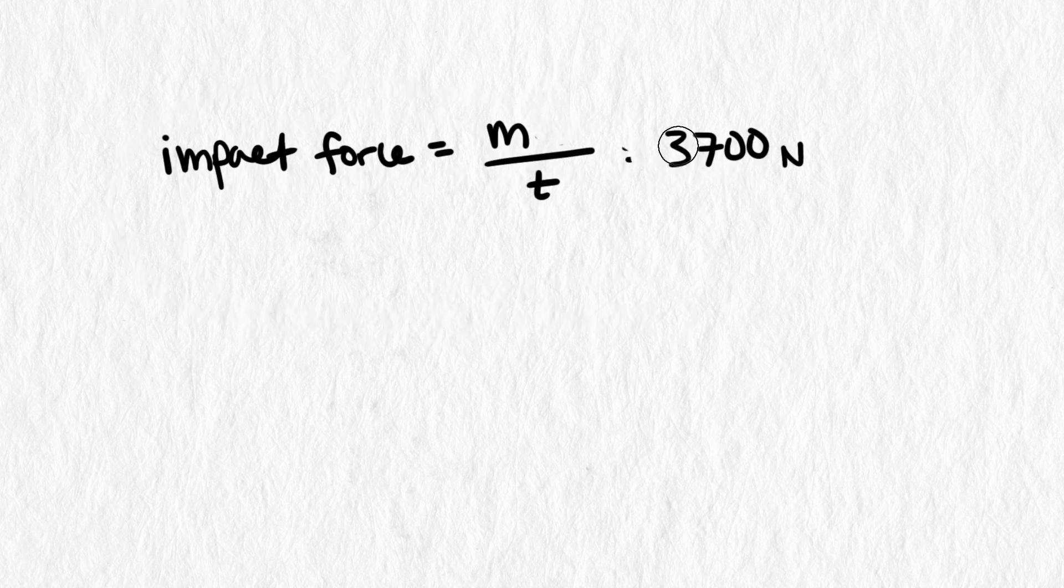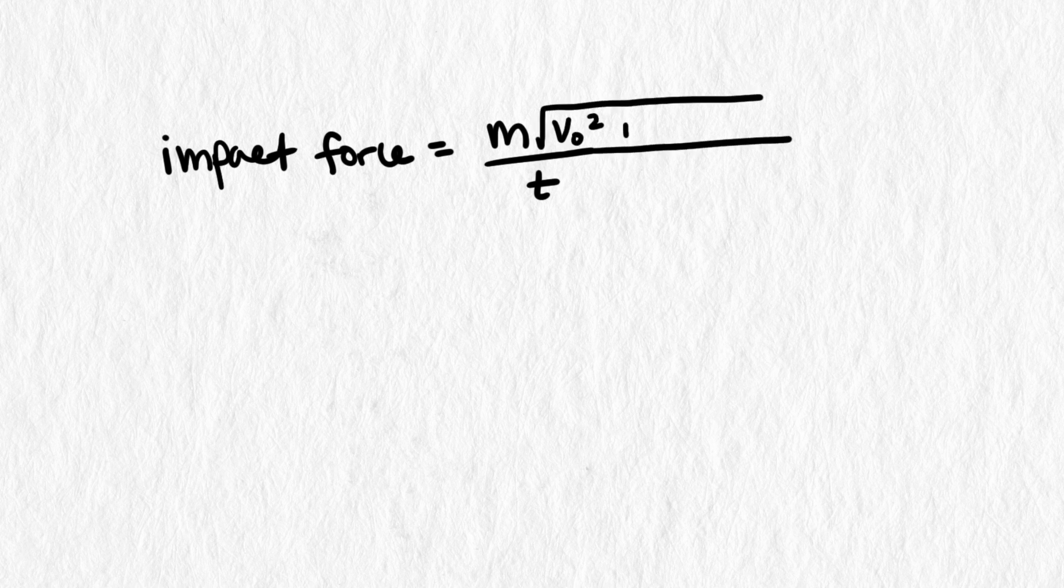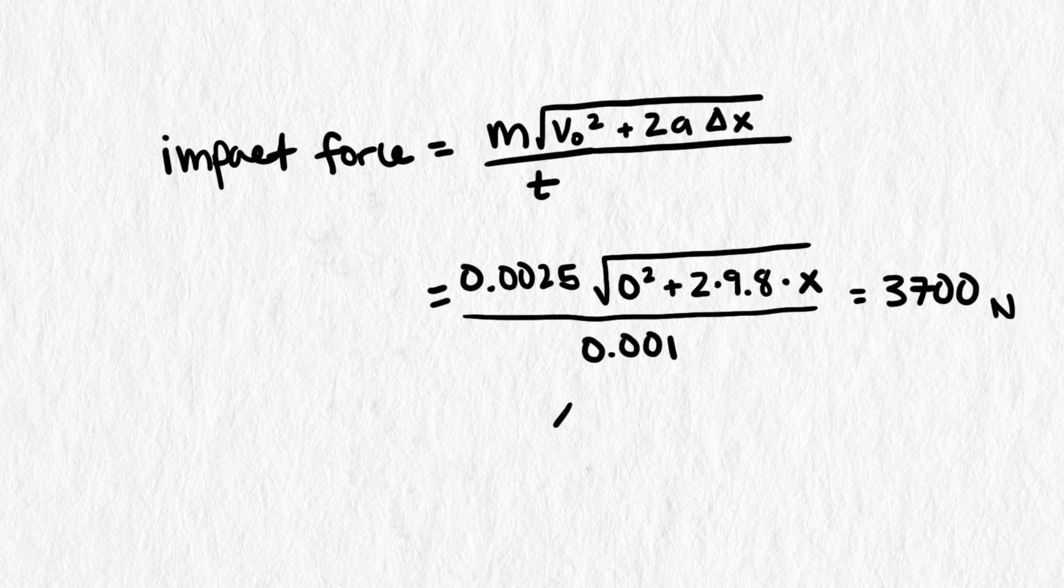By placing our velocity equation inside our impact force equation, we get this function here. By setting it equal to 3700 and solving for x, we get a height of over 100,000 meters. That's over 12 times higher than Mount Everest.